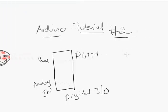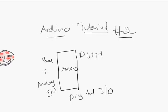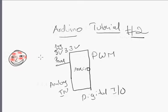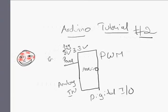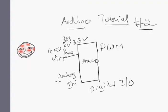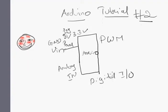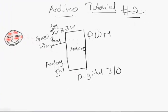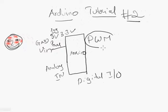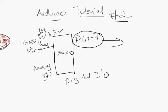In Arduino tutorial 1 we learned about the basic block diagram for Arduino. It has a power module with your 5 volts and 3.3 volt regulated outputs, then you have your ground, your Vin, analog inputs, digital inputs and outputs, and PWM. Today we're going to talk about this PWM.